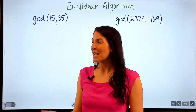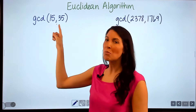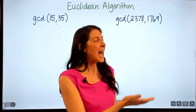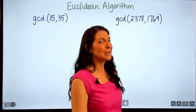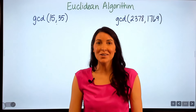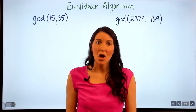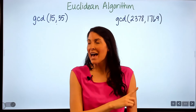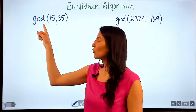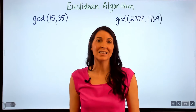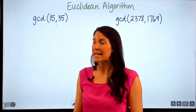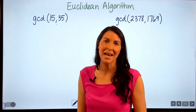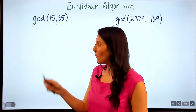I'm going to walk through an example that uses smaller numbers so you can see how the algorithm works, and then we will go through a problem that uses larger numbers and is a bit more challenging. Also, after I go through each of these examples, I will show you how to write the greatest common divisor as a linear combination of the two integers, because sometimes you may be asked that question.